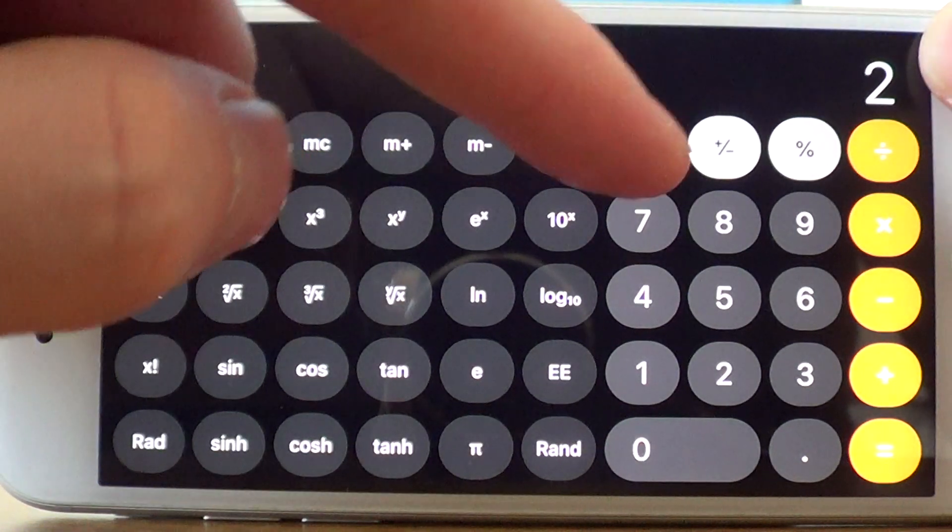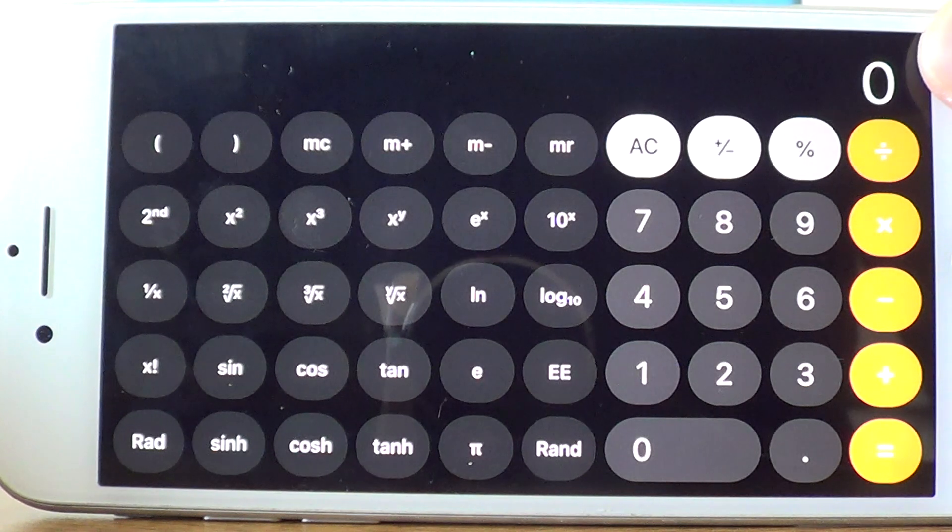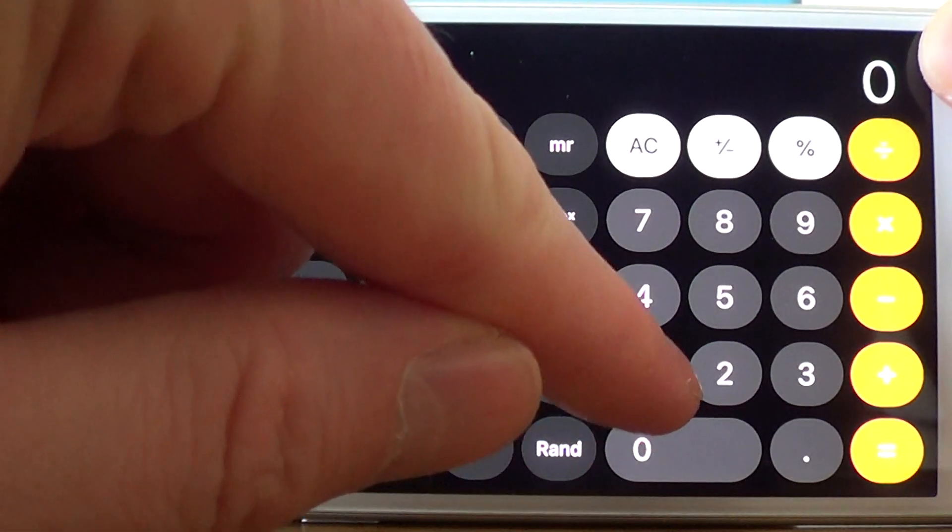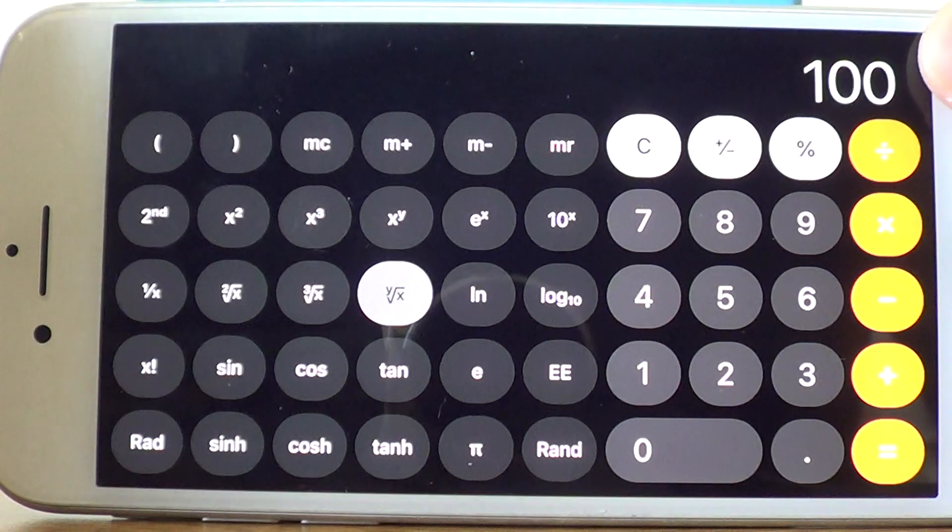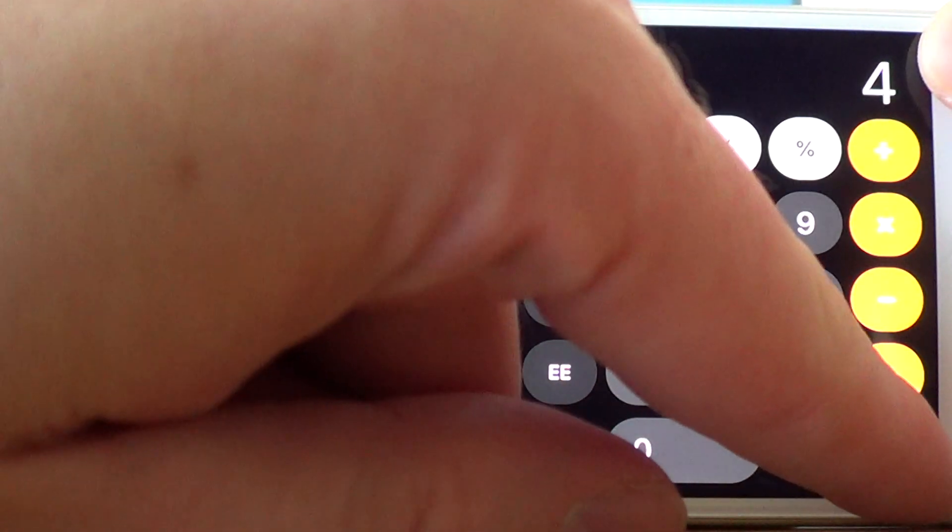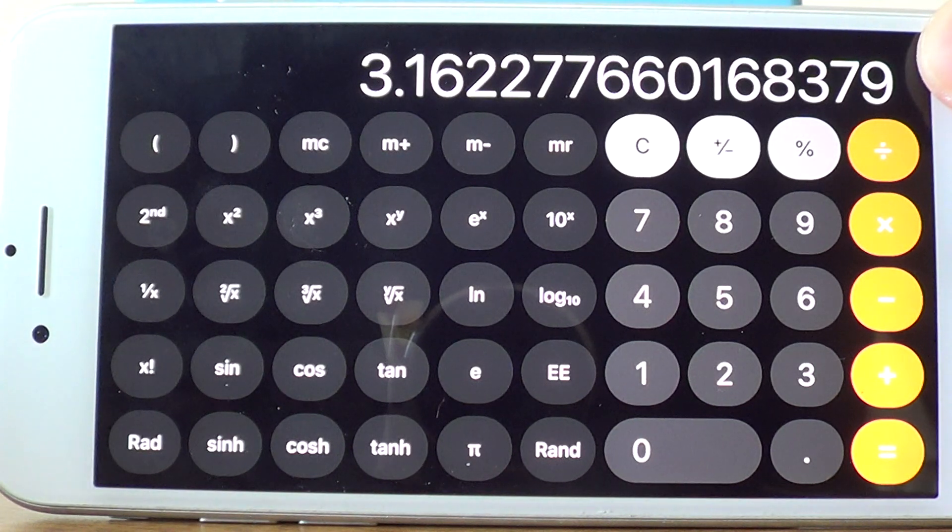Let's do one more example. If we delete this one off, let's work out the fourth root of 100. So we type in 100, then press the root key, and then press 4. Hit the equals and we get the answer 3.16.